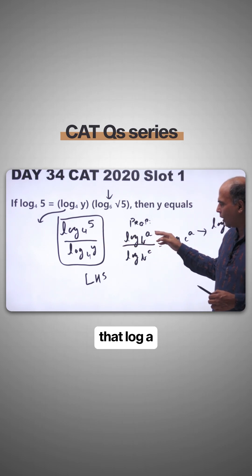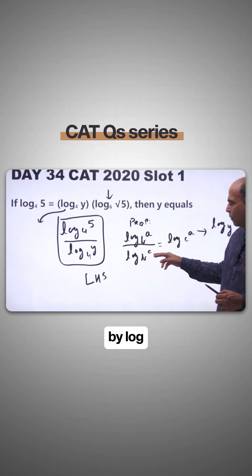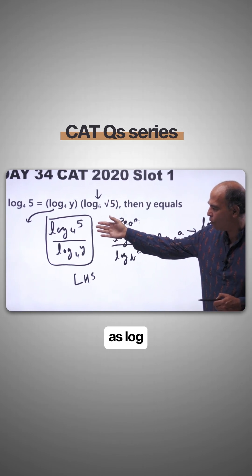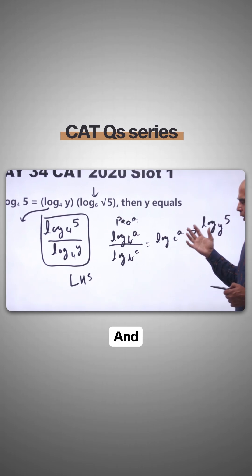Using the property that log a base b divided by log c base b can be written as log a base c, we apply this to get the expression as log 5 base y on the left hand side.